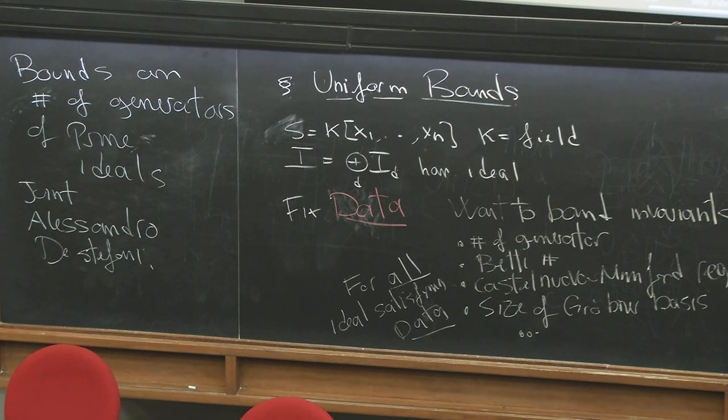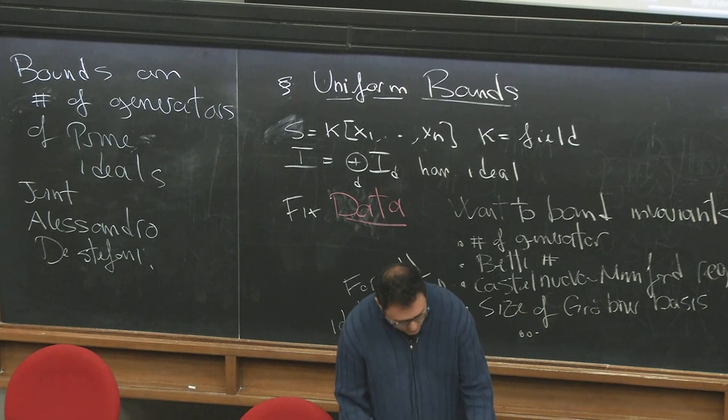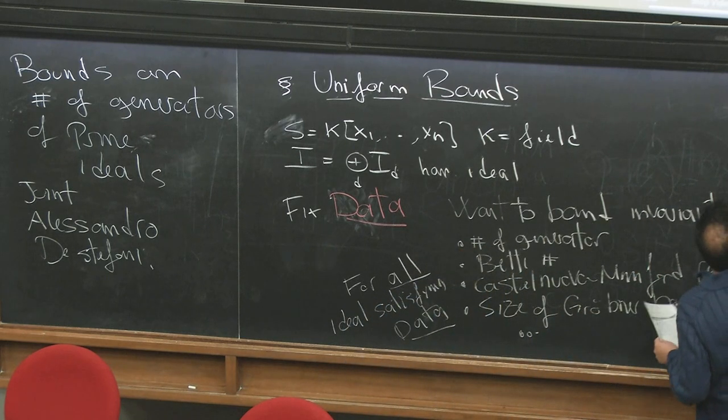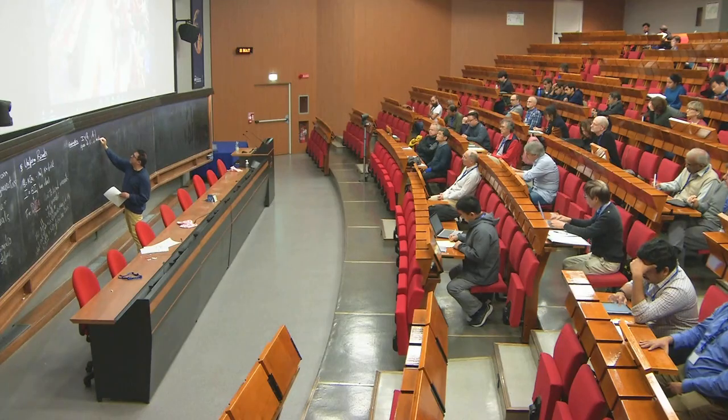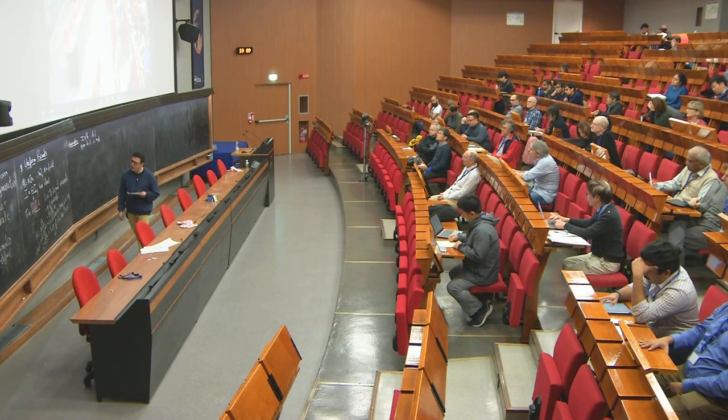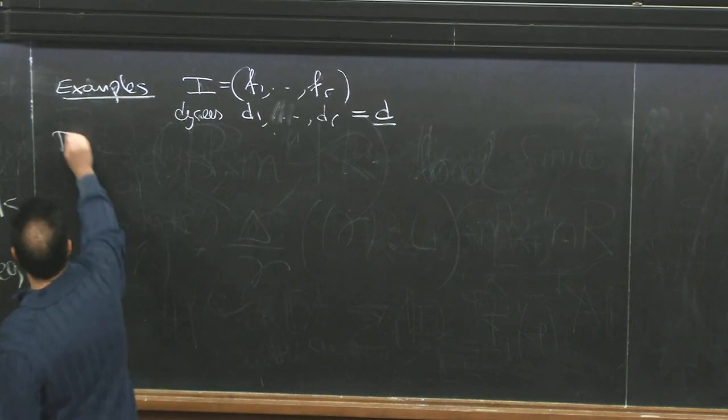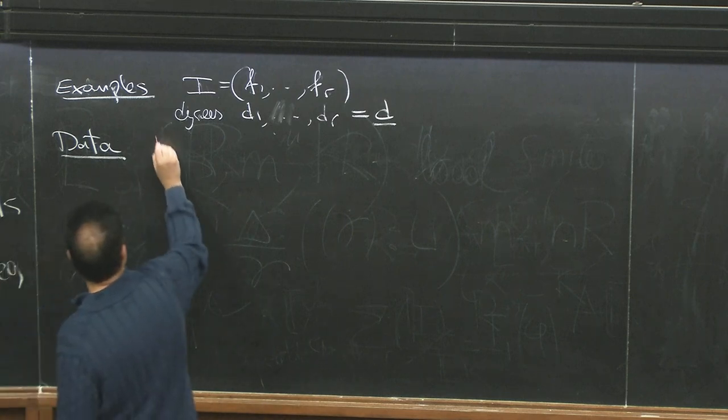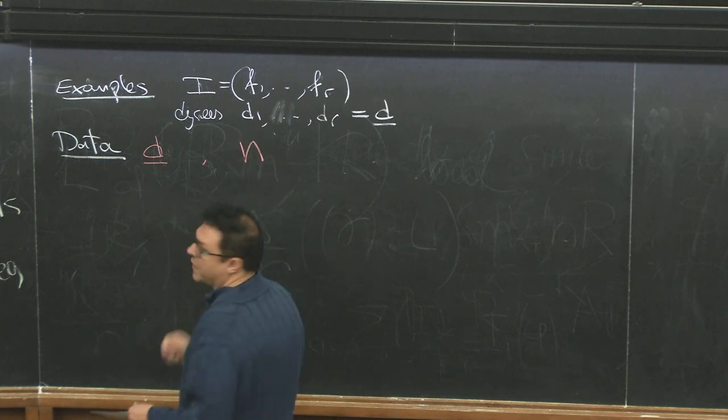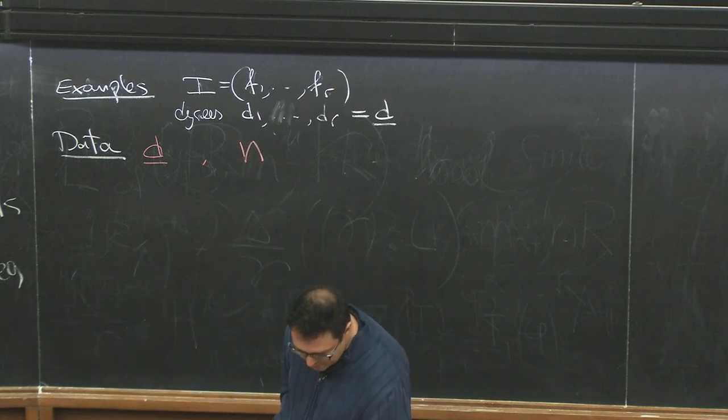Some examples of this type of problem. Let's say my ideal I is generated by F1 to FR of degrees D1 up to DR. This sequence of degrees I'll denote with a vector D. So in this case the data is D